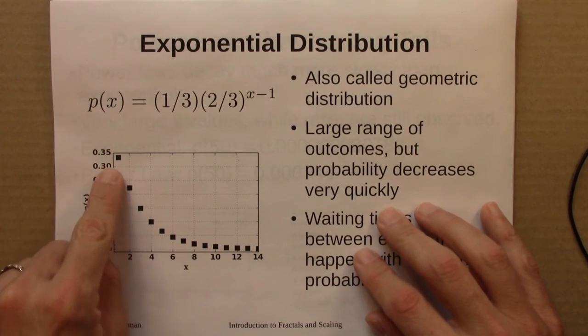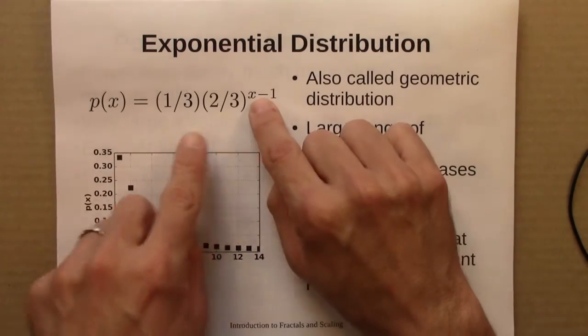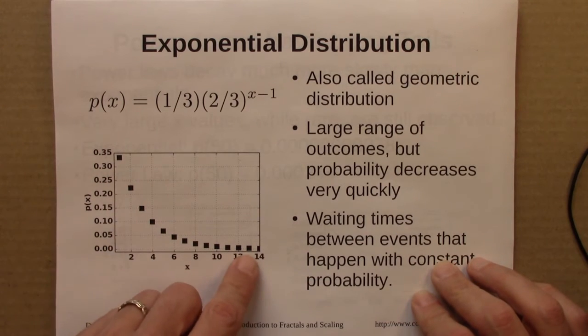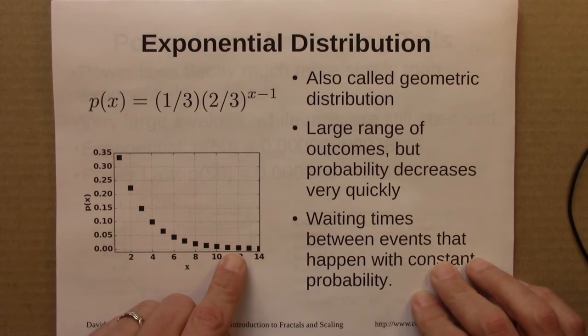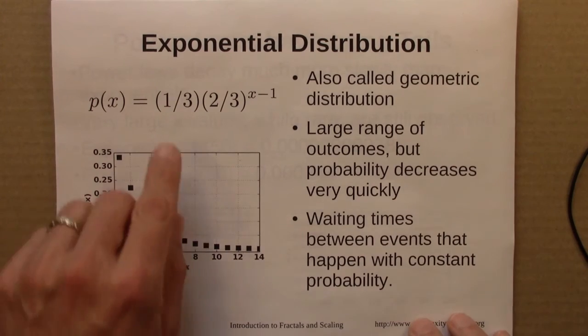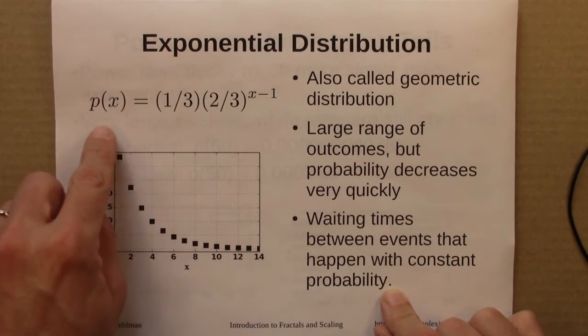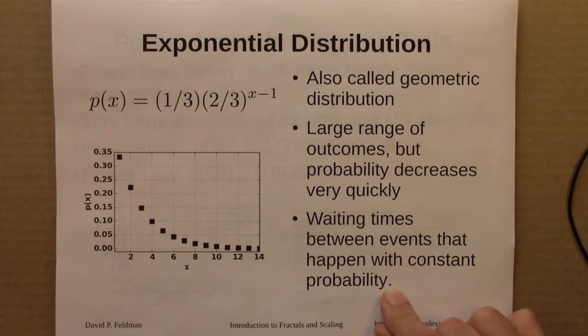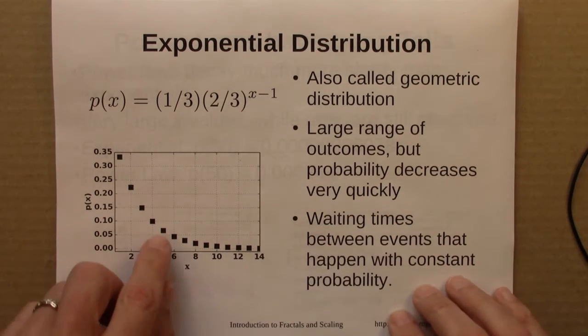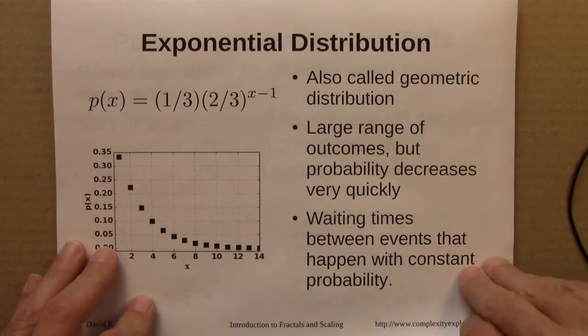So sometimes I miss a lot of times in a row, and it takes many, many trials. More often I get it pretty quickly. And so this is an exponential distribution, so called because the variable is up in the exponent. There are also a large range of values, but large values become very unlikely very quickly. So these are very common, waiting times between events that happen with a constant probability. Here the event is, I throw something into the recycling bin, I have a constant probability of being successful. And lots of other distributions, in fact including the normal distribution, are exponential for large x. So exponential is an important distribution.